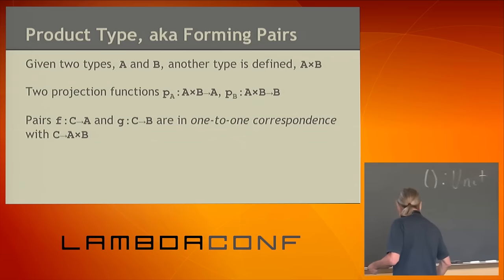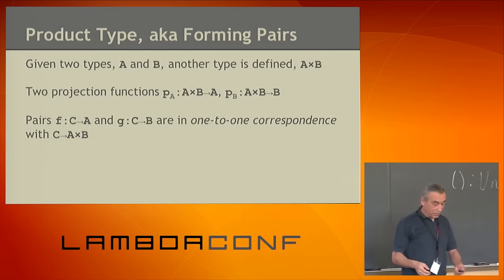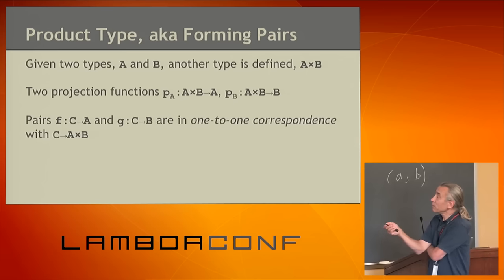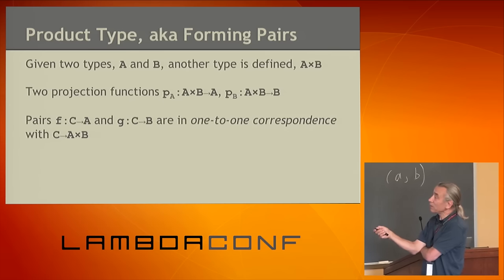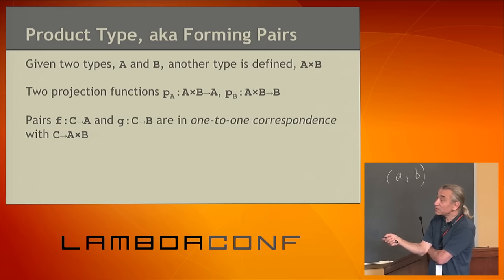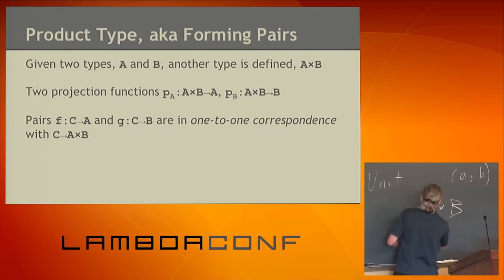Now, product type — also known as pair type, written A cross B. It's called product type, and in this theory it's defined through a universal property. Given two types, this type always exists. It has two projection functions: the first maps A cross B to A, the other maps A cross B to B. Every two functions from an arbitrary C to A and to B are in one-to-one correspondence with functions from C to this product.